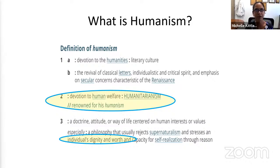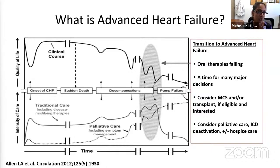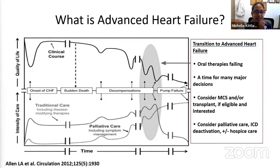So humanism in the care of the advanced heart failure patient — what is advanced heart failure? This picture really shows it well. If you look at the top, it gives you a patient's quality of life over time, and at the bottom, intensity of care. When someone is initially diagnosed with heart failure, they'll have poor quality of life that improves with medical therapy, but then there is this progressive decline where patients reach that gray zone, transitioning to advanced heart failure where their oral therapies are failing. It's a time for many major medical decisions like mechanical circulatory support or MCS, transplant, palliative care, defibrillator deactivation, or hospice.